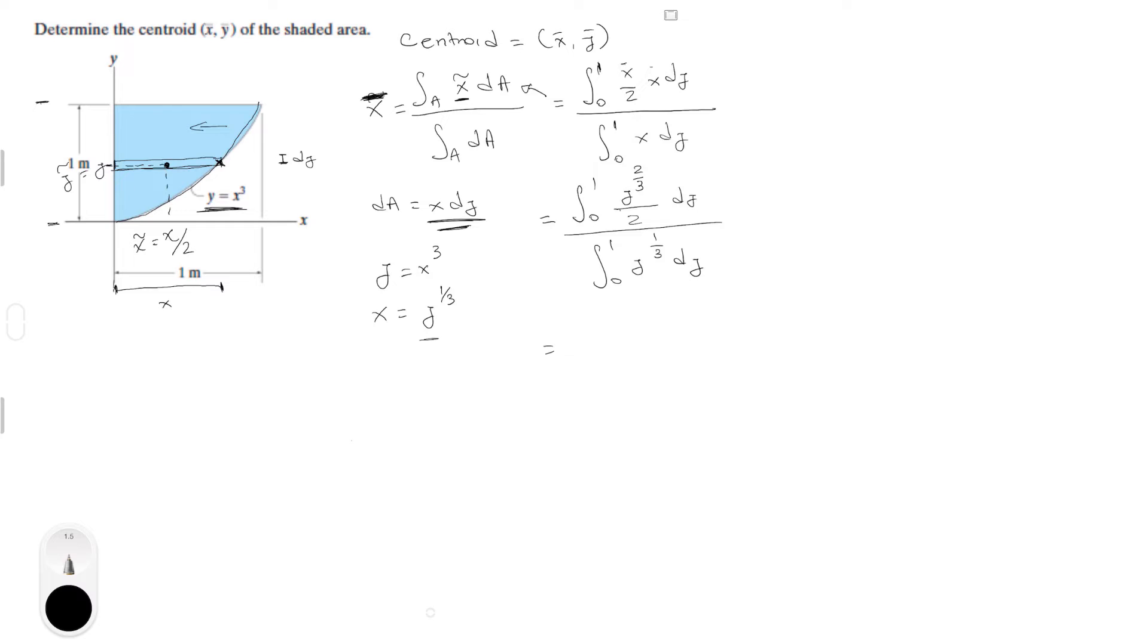Now it's just about solving the integral and this is very easy. So the integral of the first would be 3y to the five thirds over 10 and this is from 0 to 1, all over the bottom is 3y to the four thirds over 4.